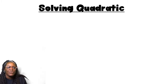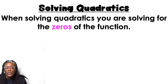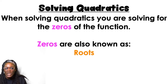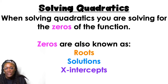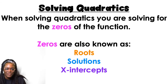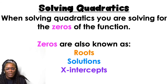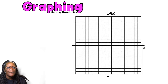When we're solving quadratics, you are solving for the zeros of the function. Zeros are also known as: roots, solutions, and x-intercepts. All of those words are often used interchangeably — if I ask you for the zeros, I'm asking for the roots; if I'm asking for the roots, I'm asking for solutions; if I'm asking for solutions, I'm asking for x-intercepts. They are the same.